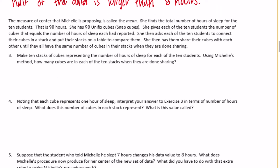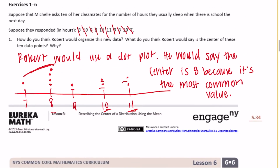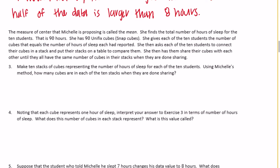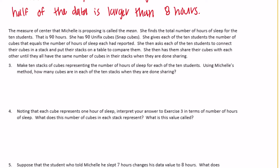The measure of center that Michelle is proposing is called the mean. She finds the total number of hours of sleep for those 10 students, which is 90 hours — she added all the values together. She has 90 unifix cubes (those little snap cubes). She gives each of the 10 students the number of cubes equal to the number of hours they reported sleeping — 10 hours gets 10 cubes, 8 hours gets 8 cubes.